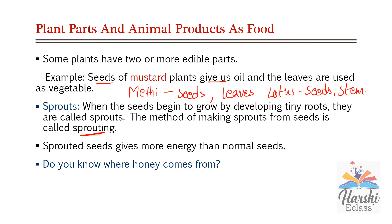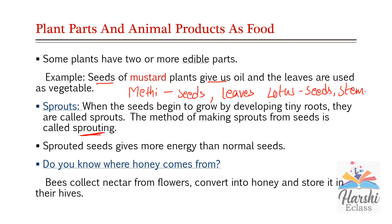Do you know where honey comes from? We get honey from honeybees. Bees collect nectar from flowers and convert it into honey, storing it in their hives. Because flowers and their nectar may be available only for a part of the year, bees store this nectar for use all through the year. When we find such a beehive, we collect the food stored by bees as honey.